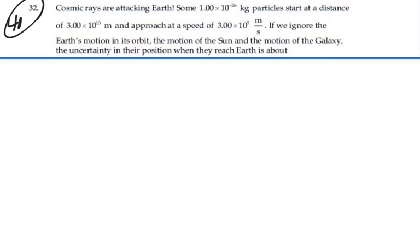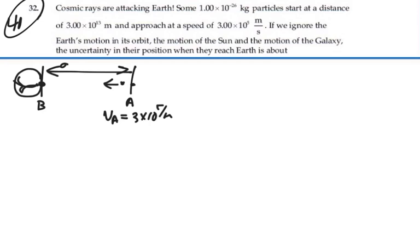Let's do this. Let's look at point A and point B in the position of these particles. Here's Earth, and here's point A and point B. And so these particles are traveling. Velocity at A equal to 3 times 10 to the 5 meters per second. And this distance here is 3 times 10 to the 13 meters.